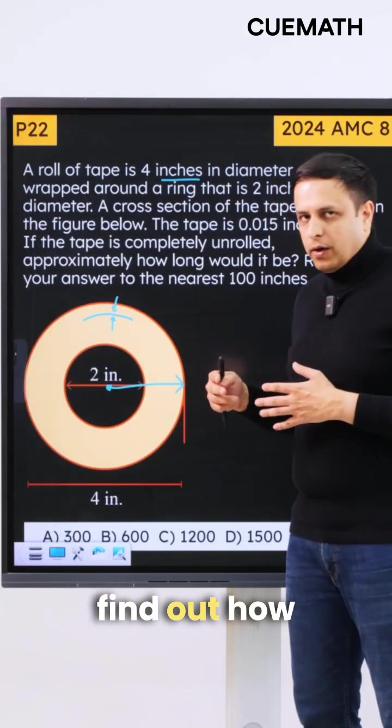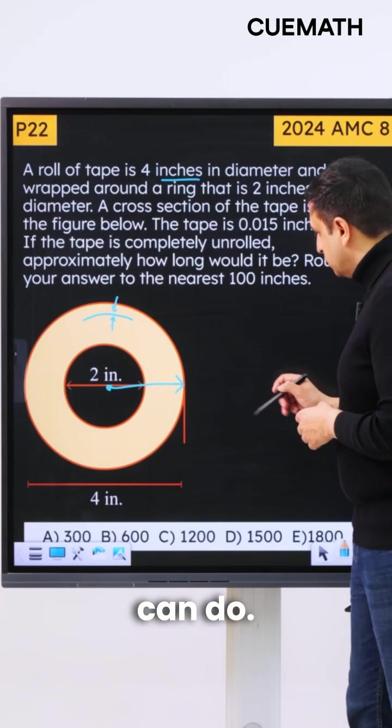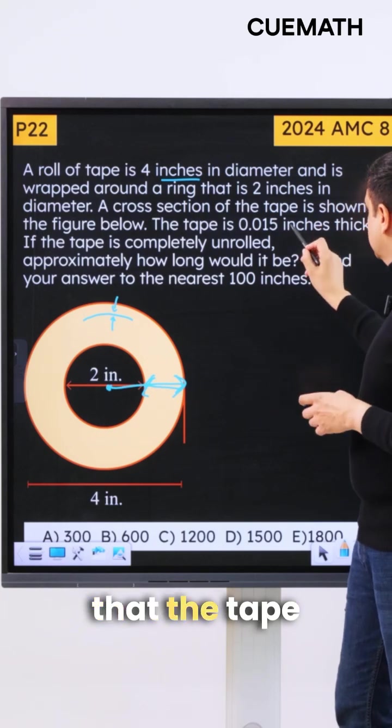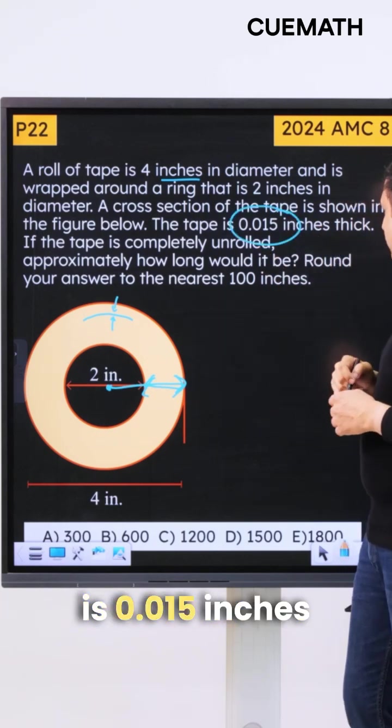So first let's find out how many unrolls we can do. So we have this thickness here as 1 inch. We also know that the tape is 0.015 inches thick.